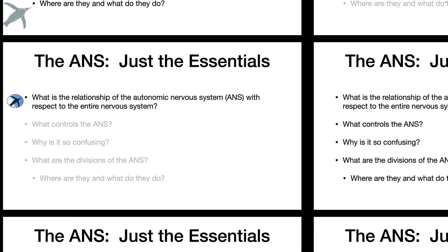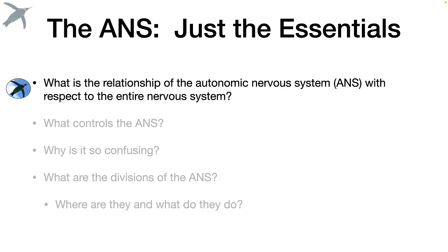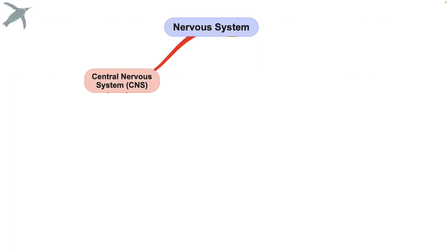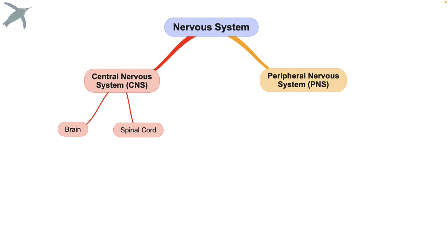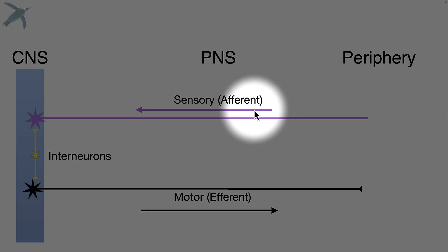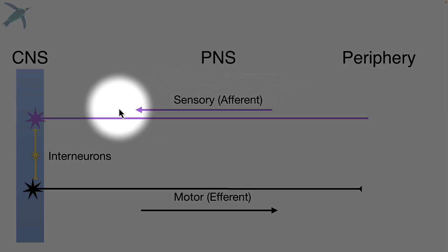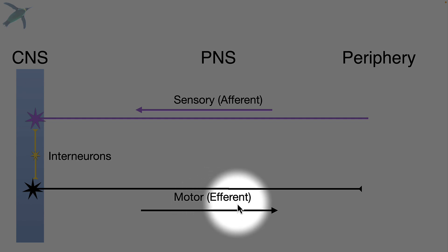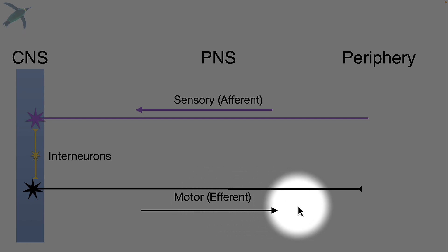What are the divisions and what do they do? First, what's the relationship between the autonomic division and the rest of the nervous system? Here's the nervous system: we've got the CNS, which includes the brain and the spinal cord. Then we have the peripheral nervous system, with the sensory or afferent pathways and the motor or efferent pathways — sensory coming into the CNS, motor going out from the CNS.